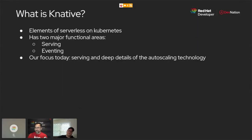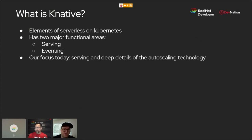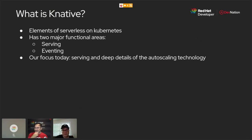Knative is a project that is focused on building blocks that provide some fundamental technologies for serverless. We make a distinction here — a lot of people when they hear serverless think of functions as a service and products like Amazon Lambda. When we talk about serverless here, we're talking about enabling some core technologies and core concepts. There are two major functional areas in Knative: serving, which is really about scaling on-demand applications, and eventing, which is about working with events emitted by different sources. Today we're going to focus on the serving part and specifically the autoscaling technology.